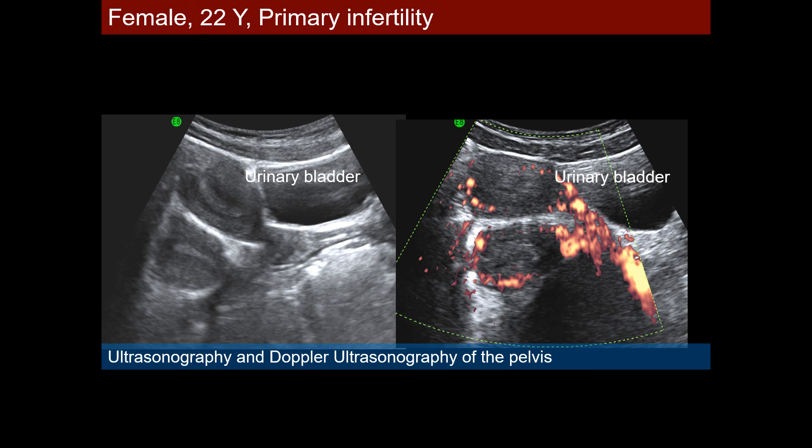Our next case is a female, 22 years old, with primary infertility, and here we have the ultrasonography and the power Doppler ultrasonography of the pelvis.